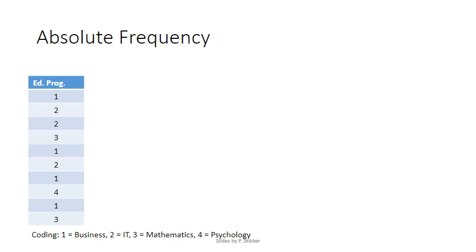For example, with Educational Program, which was coded as one being Business, two IT, three Mathematics, four Psychology, then the first thing we might want to know is, based on these scores, how many students are doing business, how many IT, et cetera.